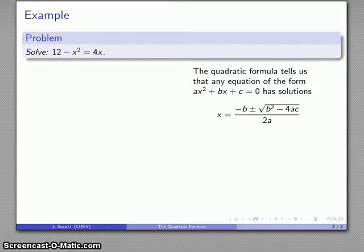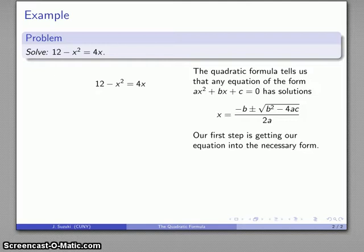Now, the thing to remember about formulas and theorems in mathematics is that in many ways they are like legal contracts. As long as you meet certain obligations, the result will follow. In this particular case, the obligation is your equation has to be in the form ax² + bx + c = 0. This is not in that form, so our very first step is to get our equation into the necessary form, which means we have to do a little bit of algebra.